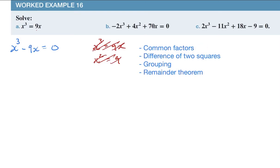First of all I'm going to look for common factors. Are there any common factors? Yes, I've got an x. So if I take out x as a common factor I'm left with x squared minus 9 which equals zero.